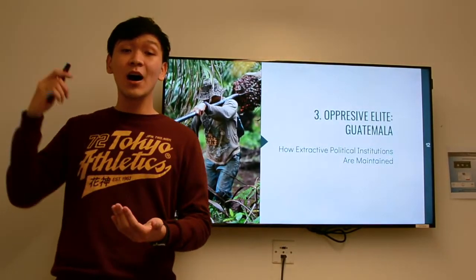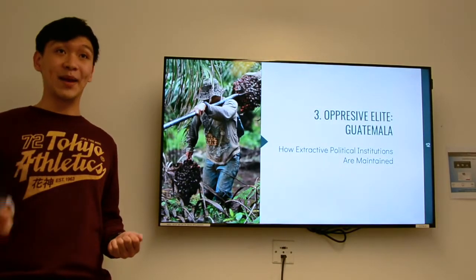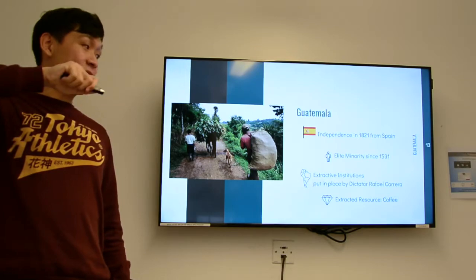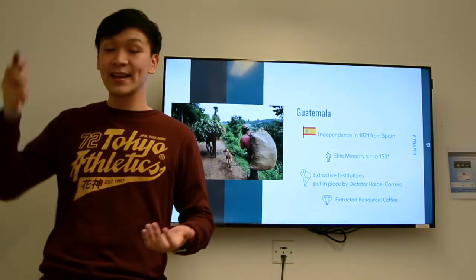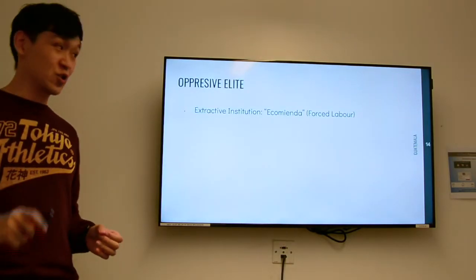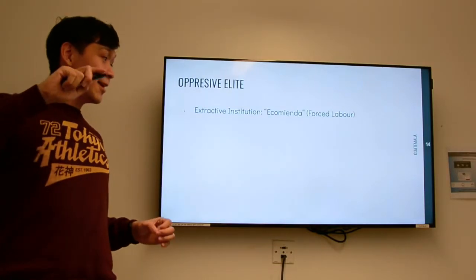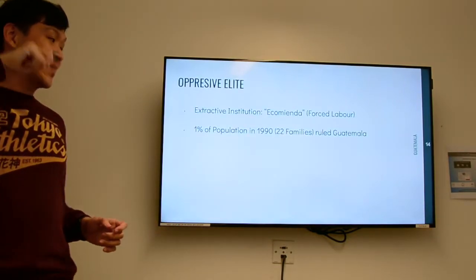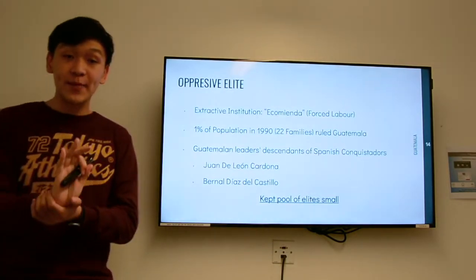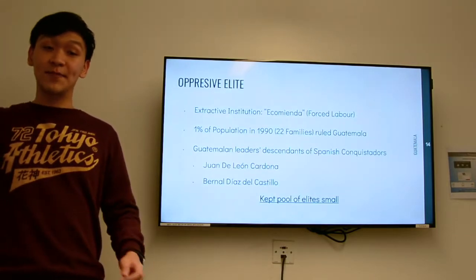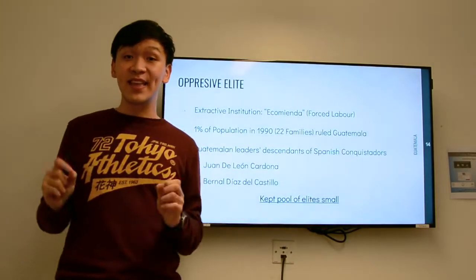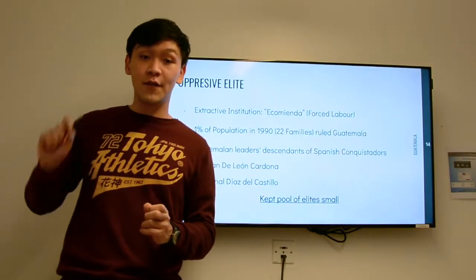We now move on to Guatemala, which answers the question of how extractive political institutions are maintained. Guatemala was a Spanish colony which gained independence in 1821. The elite minority has been ruling it since 1531, meaning the extractive institutions were laid out by the Spanish conquistadors in the 1500s. Even today, only 1% of the population — about 22 families — rule the whole of Guatemala. It comes as no surprise that the top three ministers in 1993 came from two families of Spanish conquistadors, the Cardona family and the Castillo family. To maintain extractive institutions, you need to keep the pool of elites small.